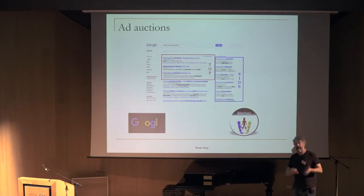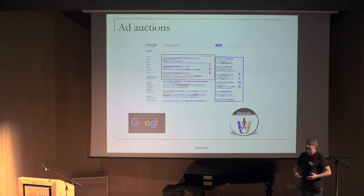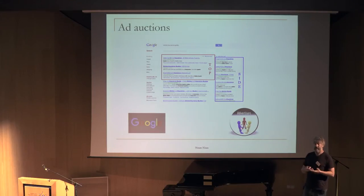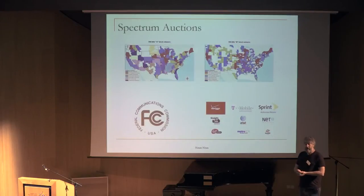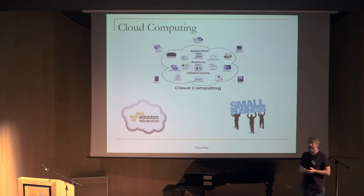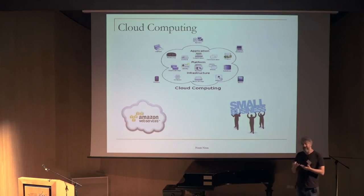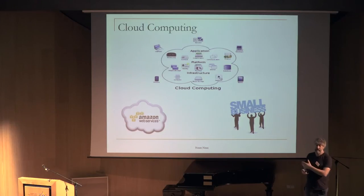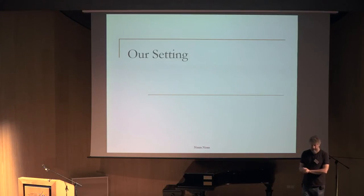The reason we're interested in this complexity is that our applications as computer scientists — ad auctions with huge scale, many slots, many keywords, spectrum auctions, allocating resources on the cloud — all of these naturally bring complexity into economic situations. To study what happens in these situations, you need to understand the role of complexity.